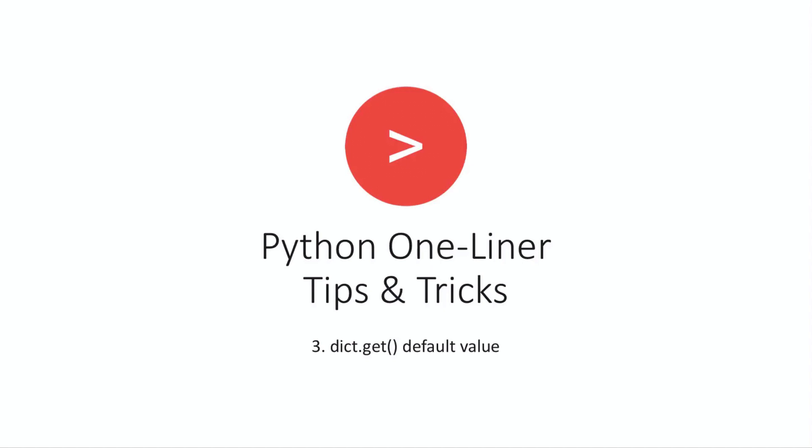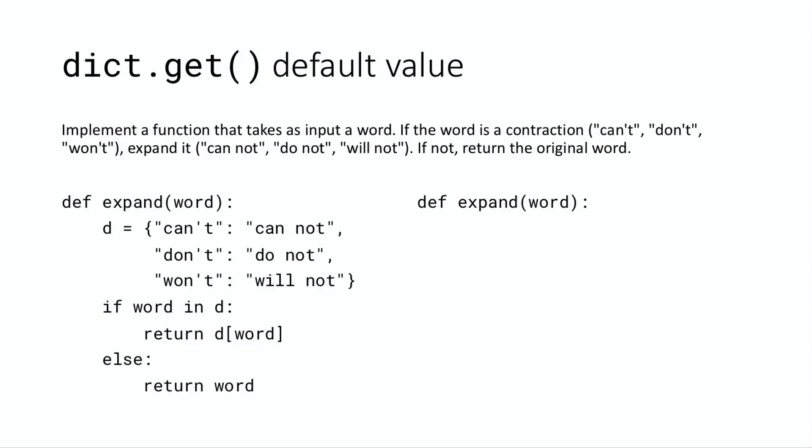Hello world, Noah here and welcome to the next video in the Python one-liner tips and tricks series. In this video we're going to be talking about the dict.get function which can supply a default value. Let's take a look at today's problem.